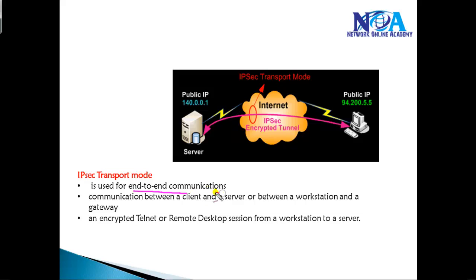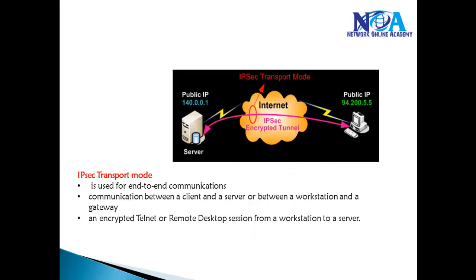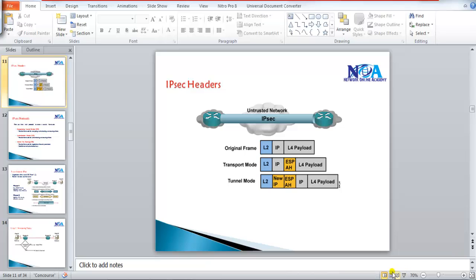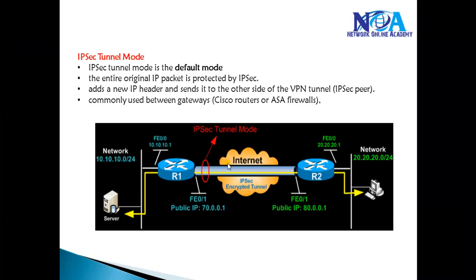In transport mode, end-to-end communication happens between the server and the client based on their own IP addresses, and forwarding happens based on those. Transport mode is more commonly used for encrypted Telnet sessions or encrypted remote desktop connections from end user to end user. Most of the time we'll be using tunnel mode, and by default it will be tunnel mode.